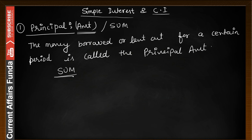We will use both terms — sum as well as principal amount — in our upcoming questions. Principal amount हमारा क्या होता है? कोई भी amount अगर आप उधार लेते हैं, या bank से जो पैसे लेके आते हैं, वो principal amount होता है। उस पर जो interest लगता है, उसके बाद आपको वो चुकाना होता है। Principal amount वो amount होता है जिस पर आपको ब्याज देना होता है।